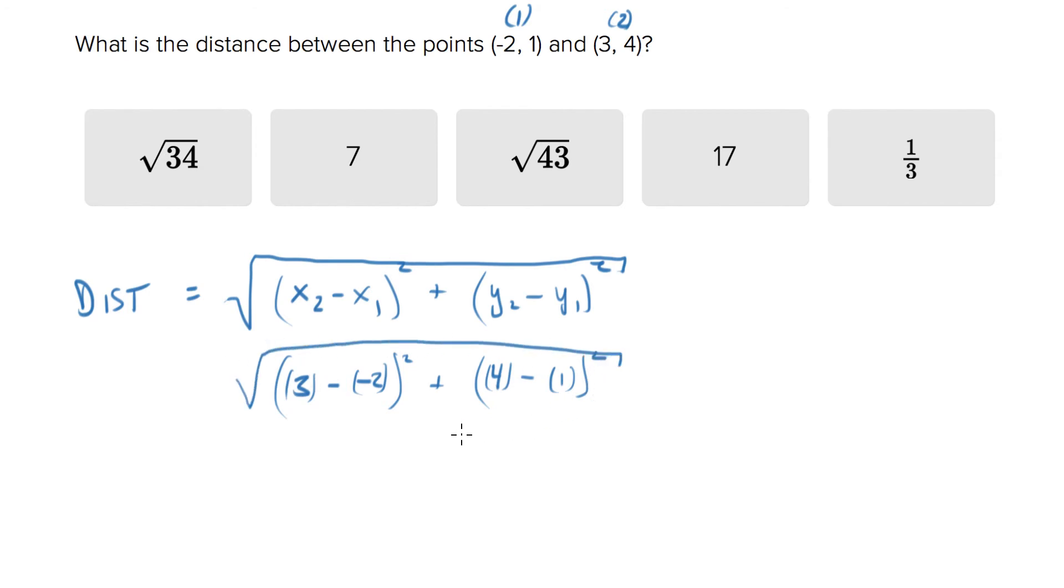Take the square root there. Now we get 3 minus negative 2 is 5 squared, plus 4 minus 1 is 3 squared. So now we're looking for 25 plus 9.